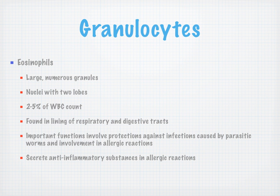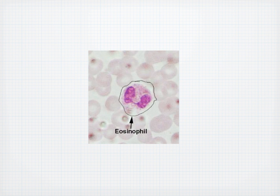Eosinophils are large, numerous-granule cells with a nucleus that has two lobes. They are 2 to 5% of the white blood cell count and are found in the lining of the respiratory and digestive tract. Their important functions involve protection against infection caused by parasitic worms and involvement in allergic reactions — they secrete anti-inflammatory substances. Word association: eosinophil equals allergy.